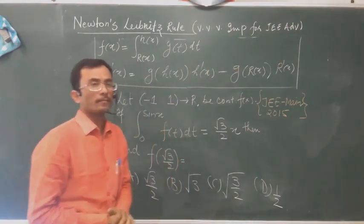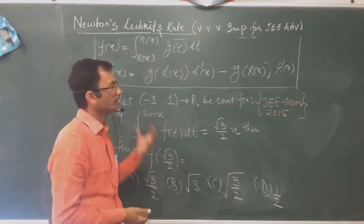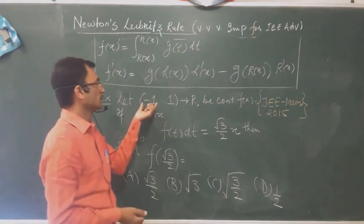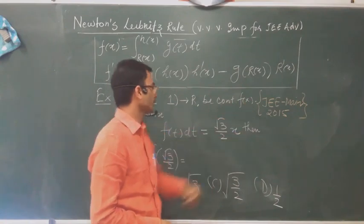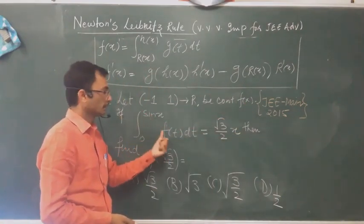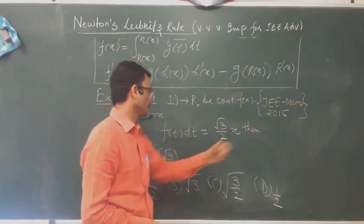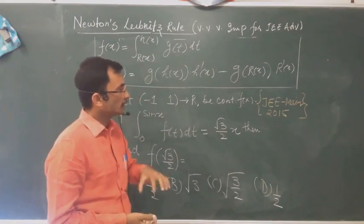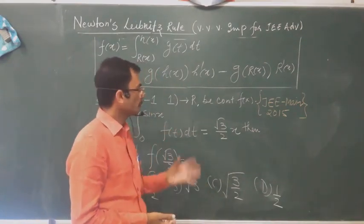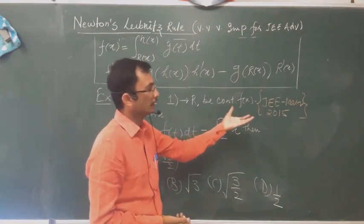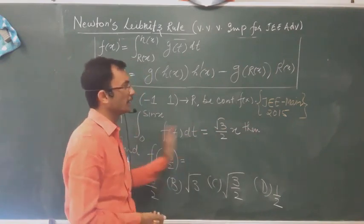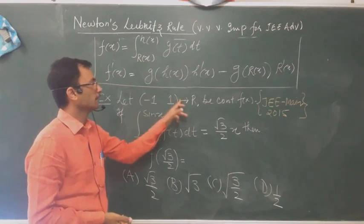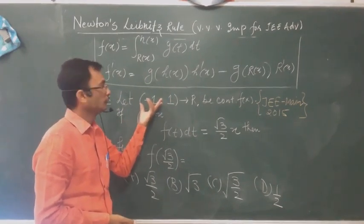Note that in the next step we will take examples. We have the formula — now let's see an example. We will do some examples from basic to pre-advance level and then we will advance. The question is: let a function be defined from [-1, 1] to ℝ, be a continuous function. If the integral from 0 to sin(x) of f(t) dt equals (√3/2)·x, then find the value of f(√3/2).